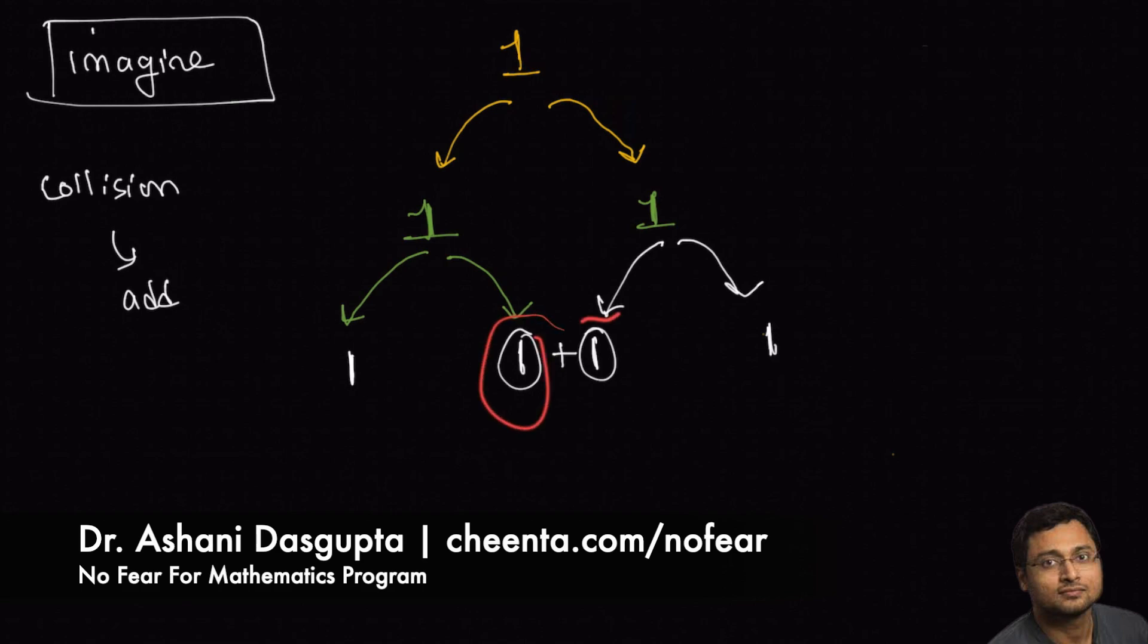Notice that the value of each of the numbers is actually preserved in the sum. So now what we have is one, two, one.